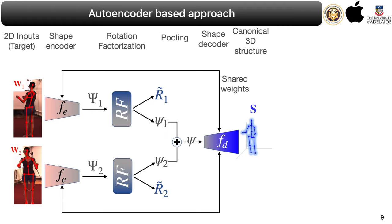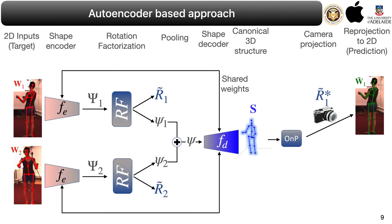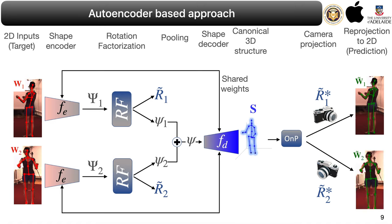Finally, the 3D structure is projected over all available views — two in this case — using the algebraic closed-form solution of either an orthographic or perspective endpoint solver, generating the predicted 2D projection. As explained above, the 3D structure S, rotation matrices R*, and the predicted 2D projections W̃ are recovered by constraining the shapes from this shared neural model.